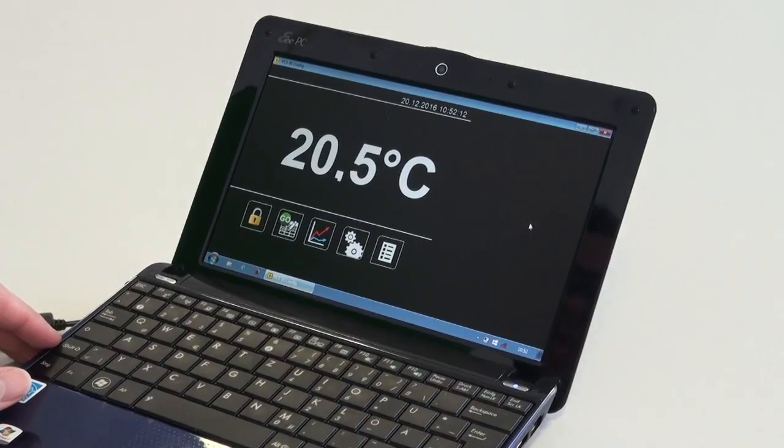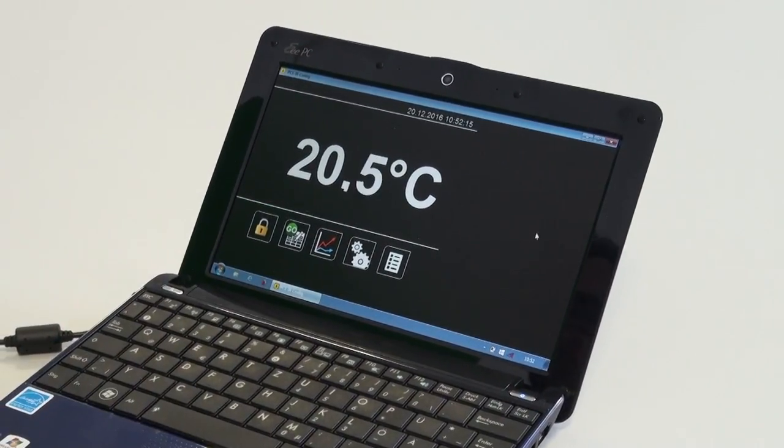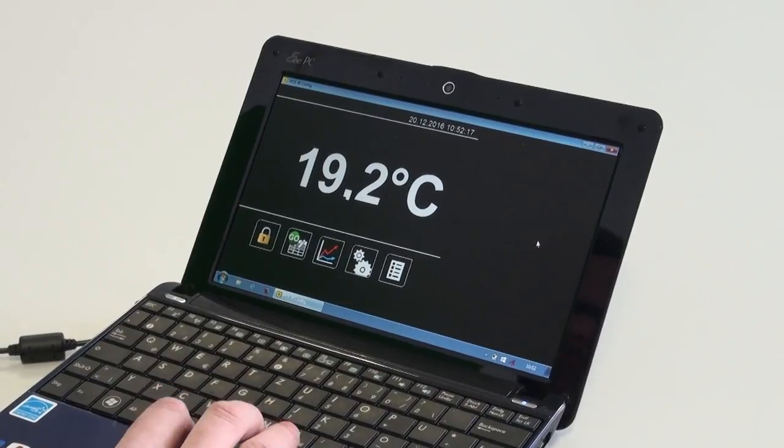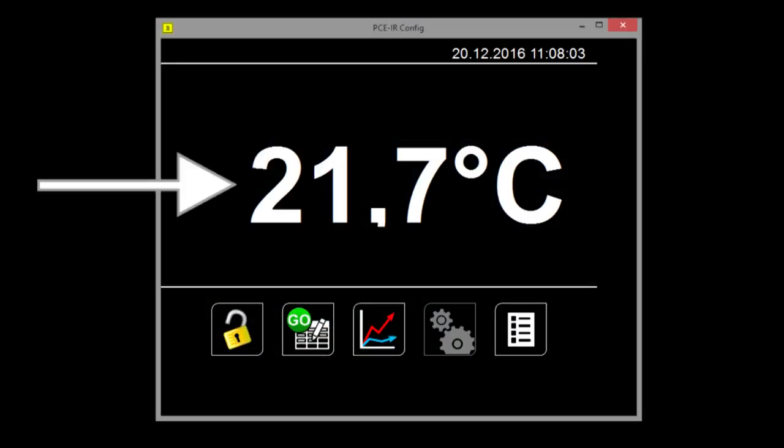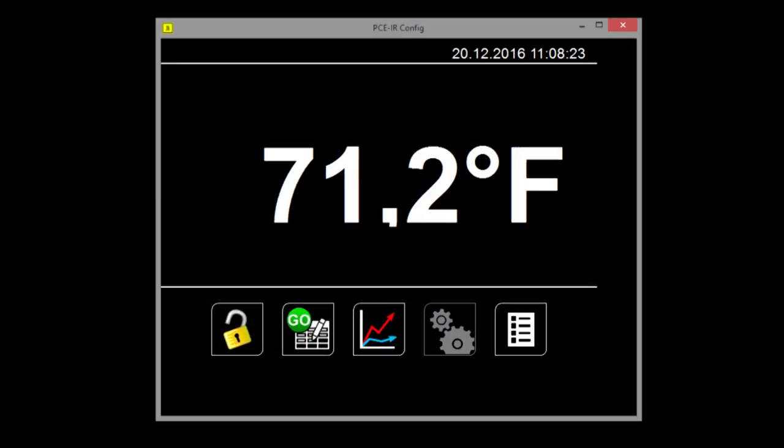As soon as the thermometer is connected, the temperature is shown here enlarged. Through a click on the temperature, you can change the degrees from Celsius to Fahrenheit.